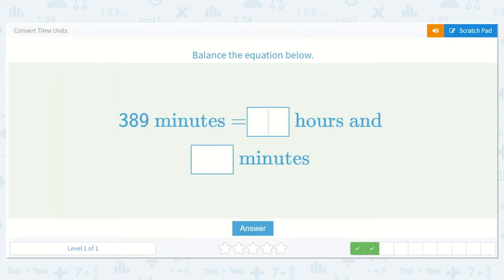Next we have 389 minutes is equal to how many hours and how many minutes? Well, how many minutes are in an hour? Yeah, 60. So if there's 60 minutes in an hour, we need to divide 389 by 60.